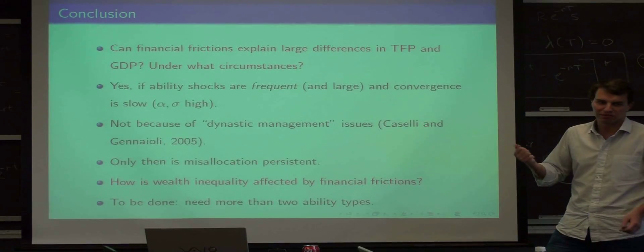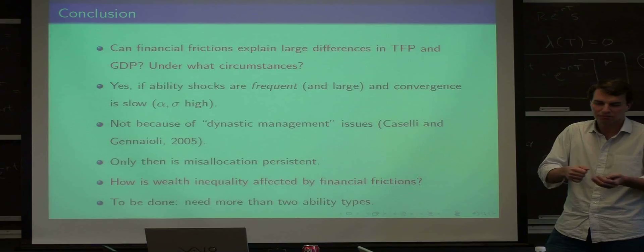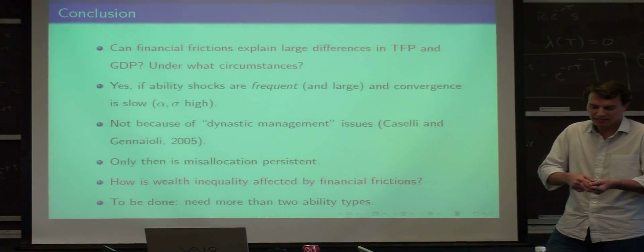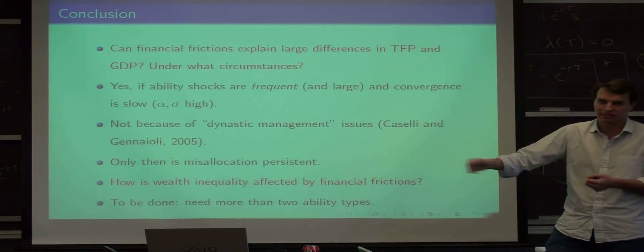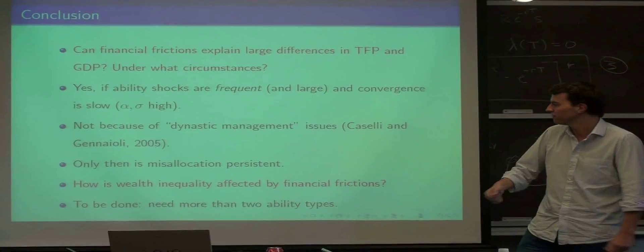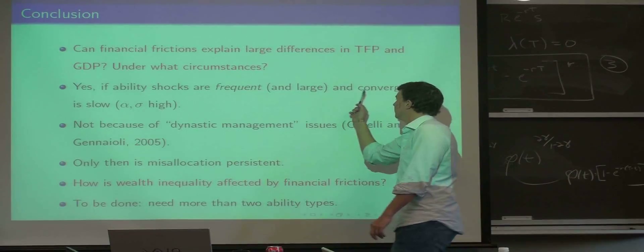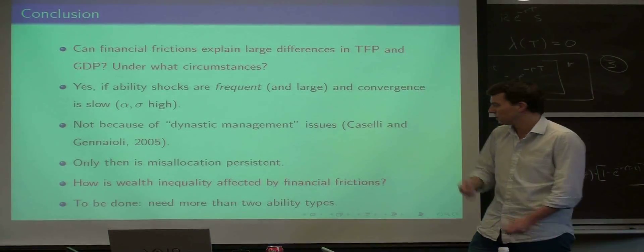That's because, as I said before, lifetimes are just too long for that to matter, because people tend to say, if I know that I'm very smart and the capital market doesn't give me the money, I'll just save it up myself. So if these shocks are frequent and conversions are slow, then you get this persistent misallocation.